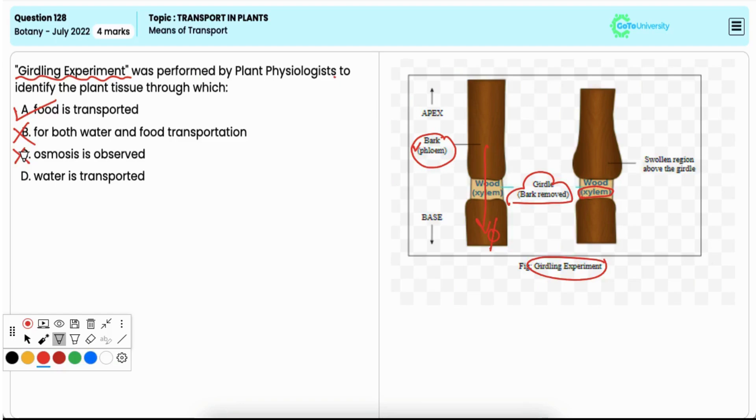Option D: water is transported. This is also incorrect. Water transport occurs through xylem, as already mentioned, which is not affected by the girdling experiment.